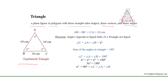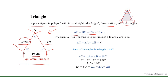An equilateral triangle is a triangle that has three equal sides. For example, in triangle ABC, side AB equals side BC equals side CA, which is equal to 10 cm.